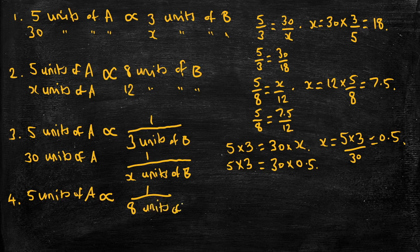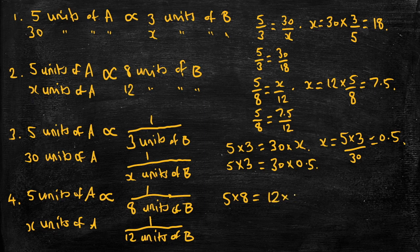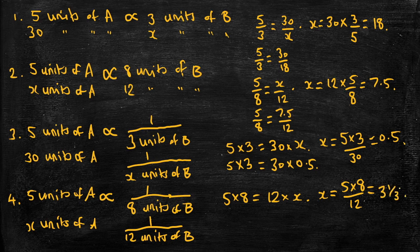Let's do one last example. Suppose five units of A are inversely proportional to eight units of B, and we have an unknown number of units of A with 12 units of B. What does X have to be to maintain that inversely proportional relationship? We've got five times eight equals 12 times X, so X equals five times eight divided by 12, which comes to three and one-third. Check: five times eight is 40, and 12 times three and one-third is also 40. Everything checks out.